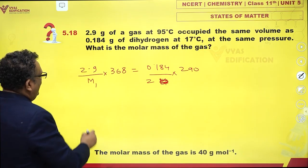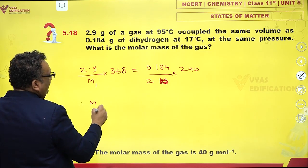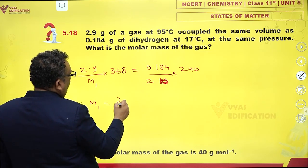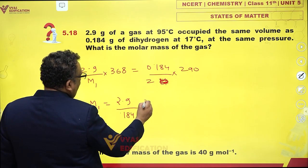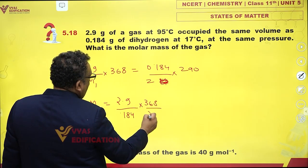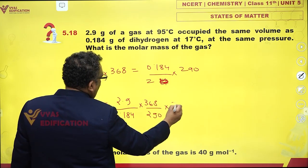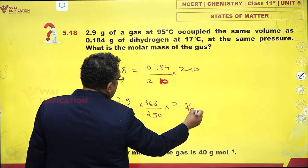That's it. So M₁ comes out to be 2.9 by 0.184 into 368 upon 290 into 2 grams per mole.